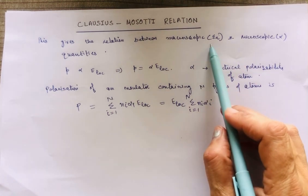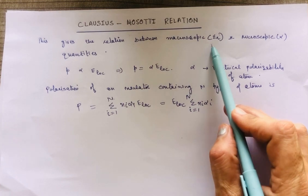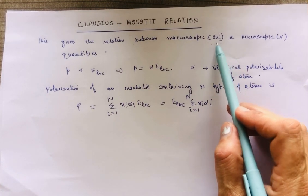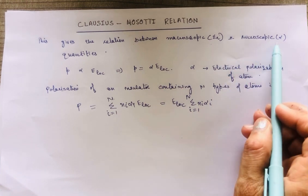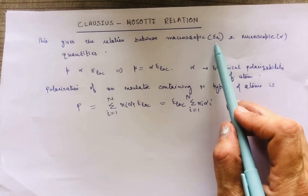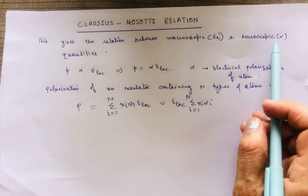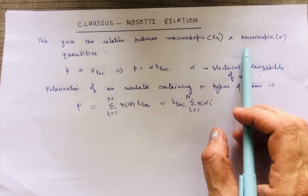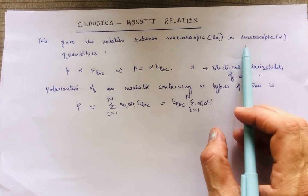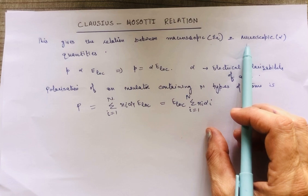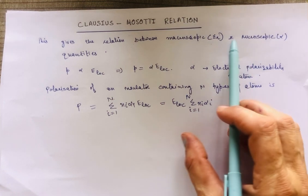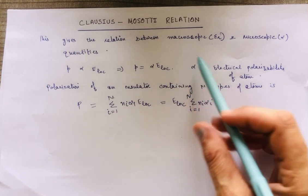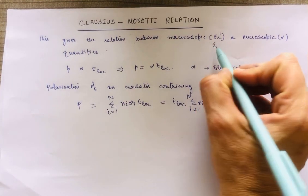The macroscopic quantity is epsilon, or epsilon_r as written in some books. The microscopic quantity is alpha, which is electrical polarizability. So this relation connects epsilon, a macroscopic quantity, and alpha, a microscopic quantity.